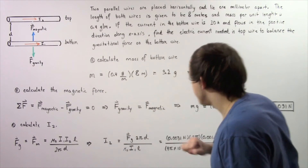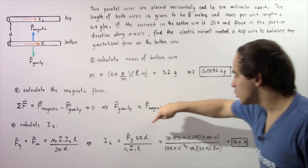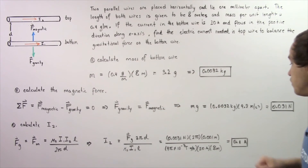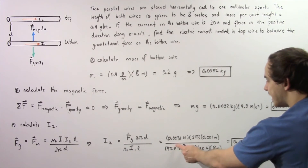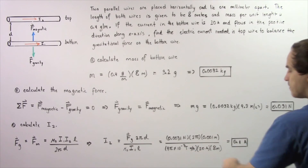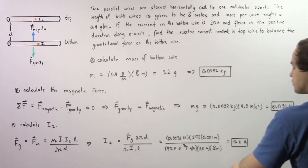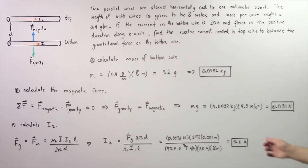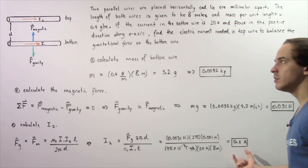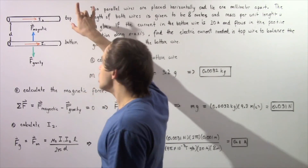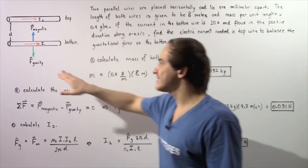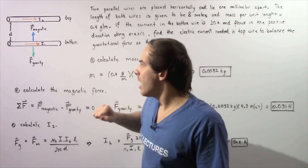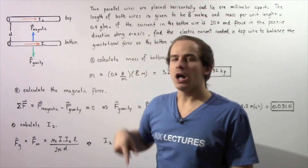Solving for I2, we get I2 equals the force of gravity multiplied by 2π D, divided by mu0 multiplied by I1 times L. Substituting values: the gravitational force is 0.031 newtons, 2π is a constant, D is 0.001 meters, mu0 is 4π × 10⁻⁷ T·m/A, I1 is 20 amps, and L is 8 meters. This gives us an electric current of 0.1 amps — the current that must exist in the top wire so that it creates a magnetic force that exactly cancels the gravitational force, so the bottom wire will not accelerate along the y-axis.